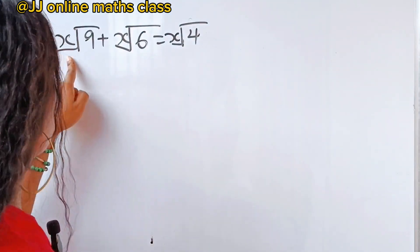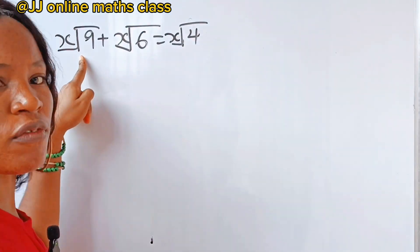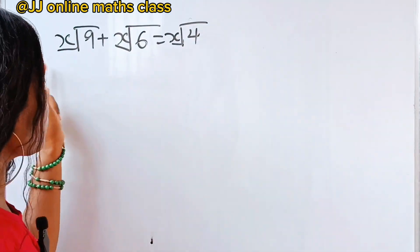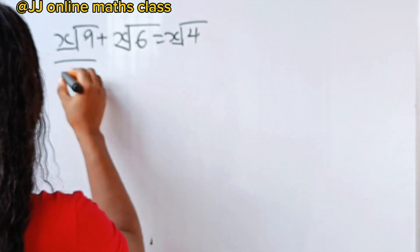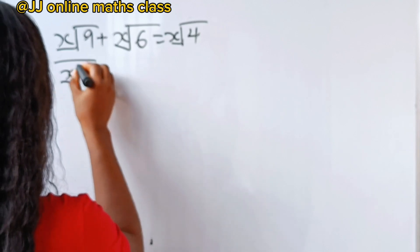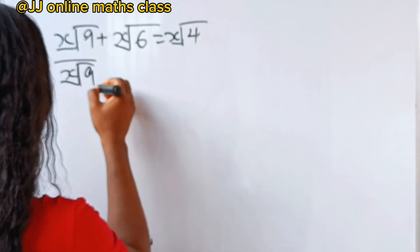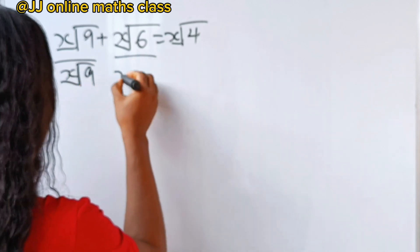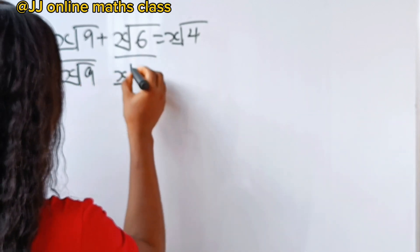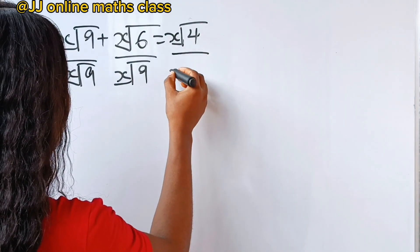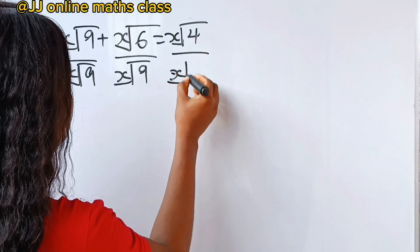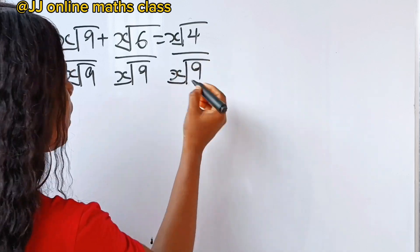First, let's divide through by x-root of 9 to simplify this. So we divide each term by x-root of 9.